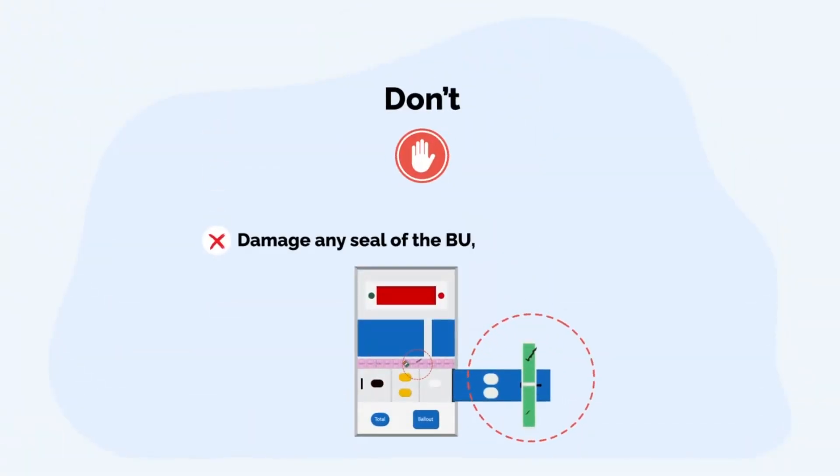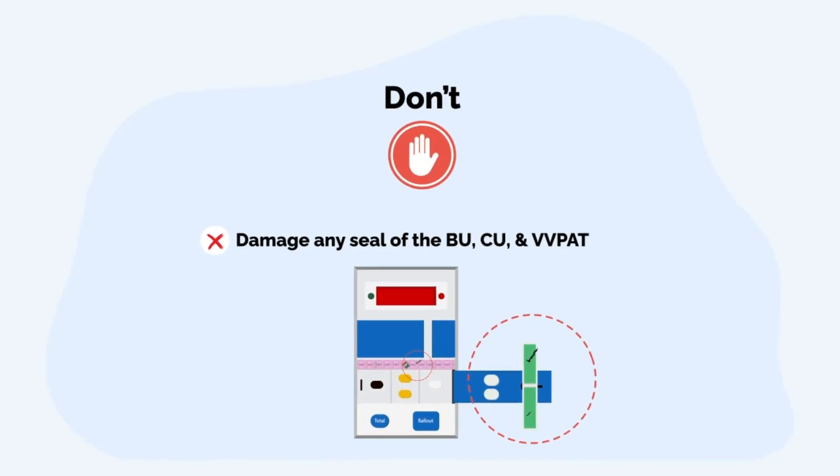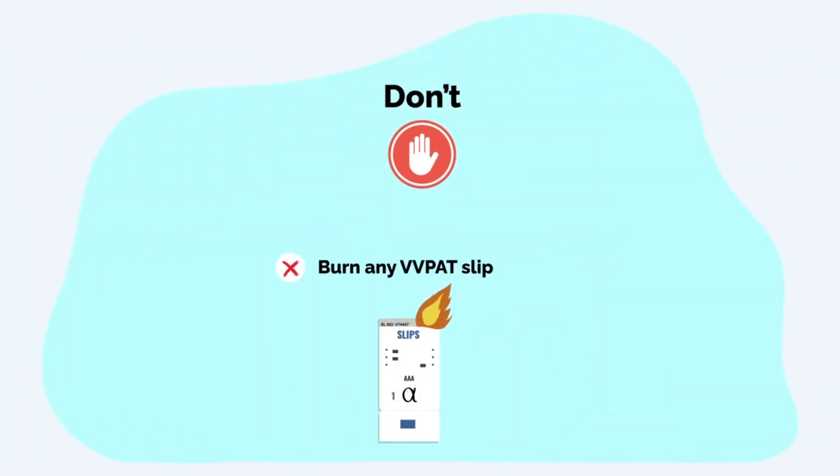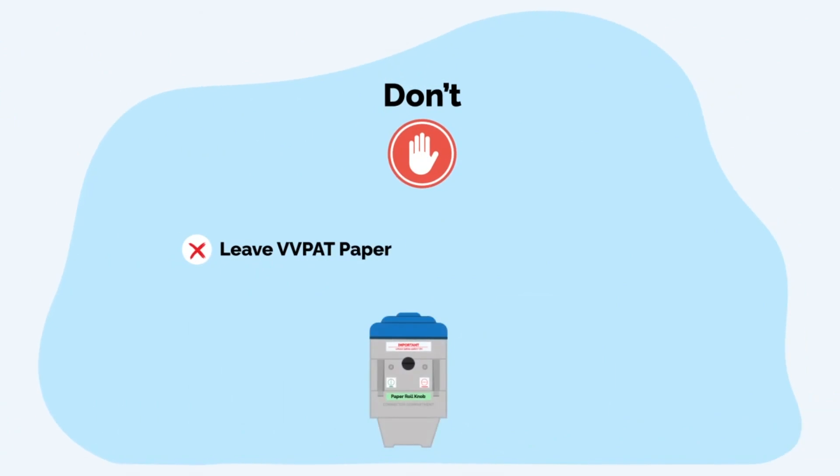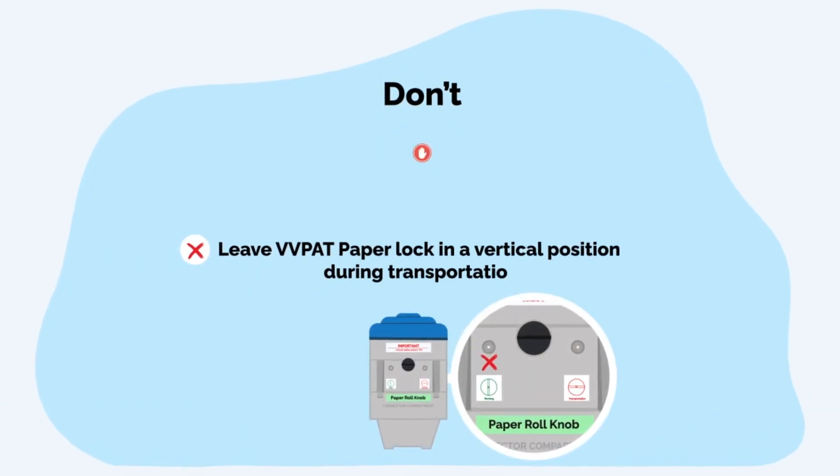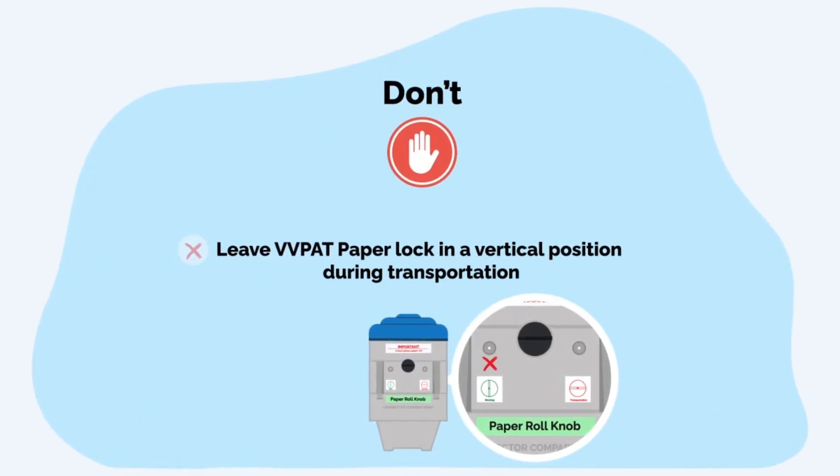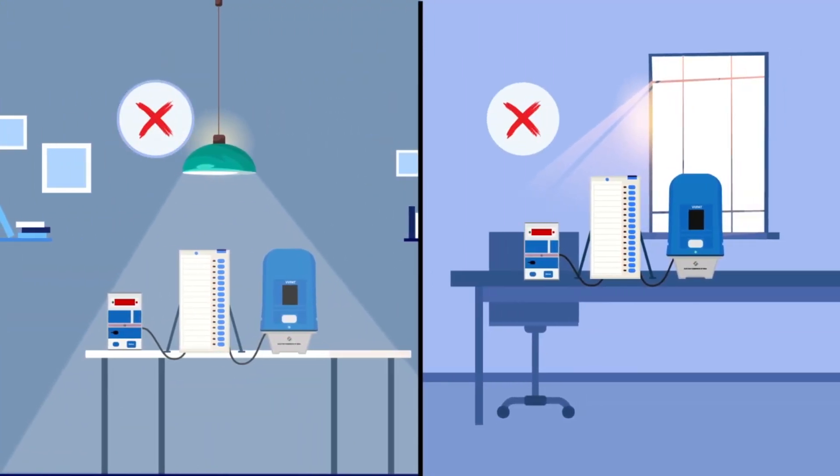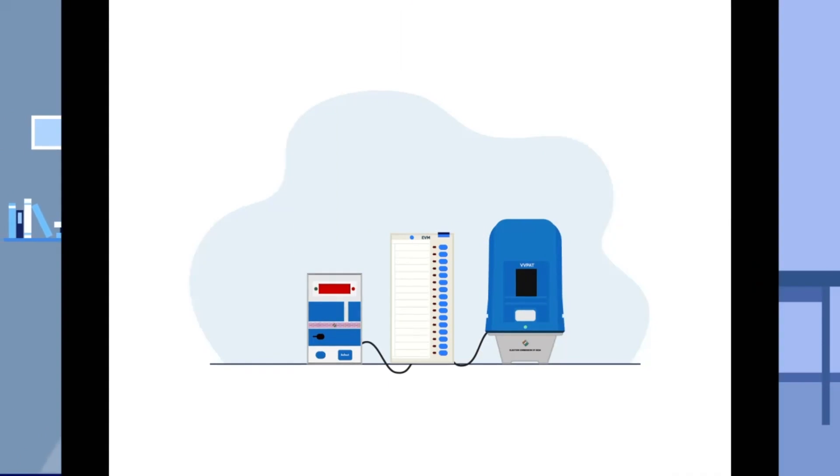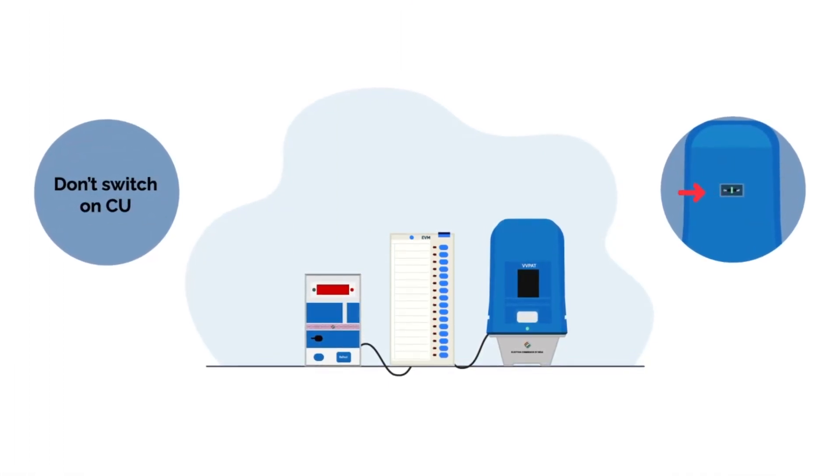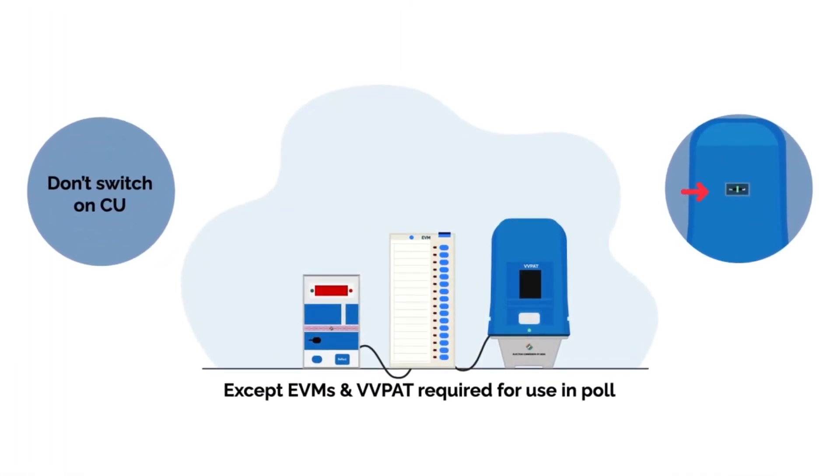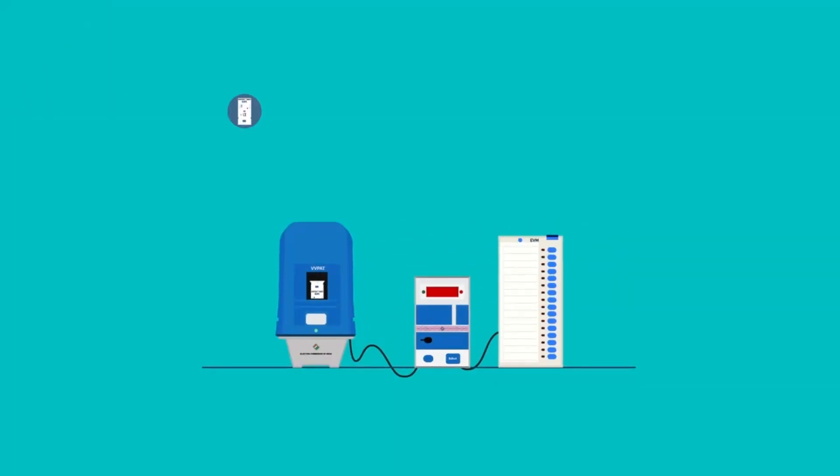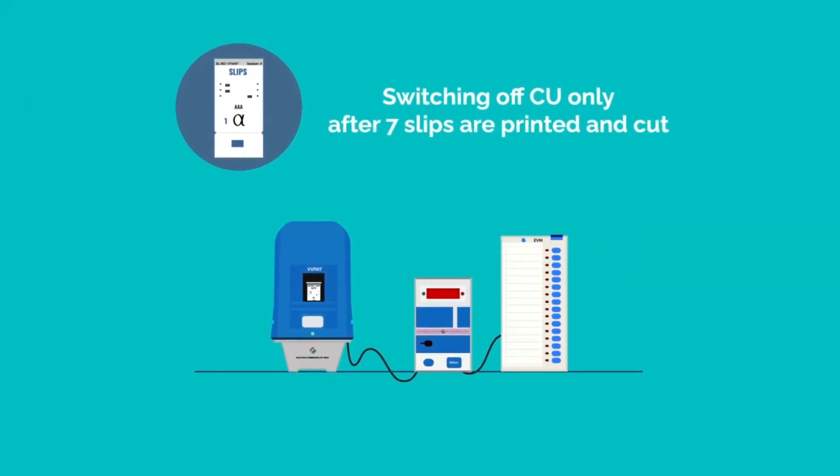Don't damage any seal of the BU, CU, and VVPAT. Don't burn any VVPAT slips. Don't leave VVPAT paper lock in a vertical position during transportation. Don't keep EVM and VVPAT in an open window or under direct light. Don't switch on CU when the VVPAT paper roll knob is in locked condition. Don't switch off CU till all seven slips are printed and cut.